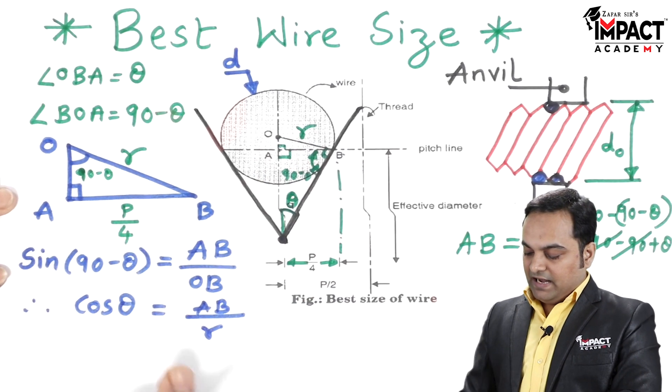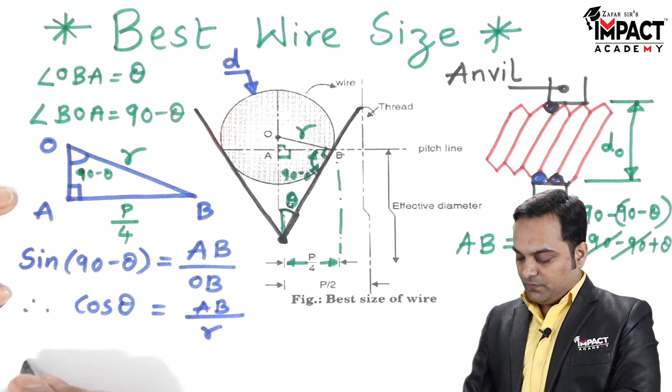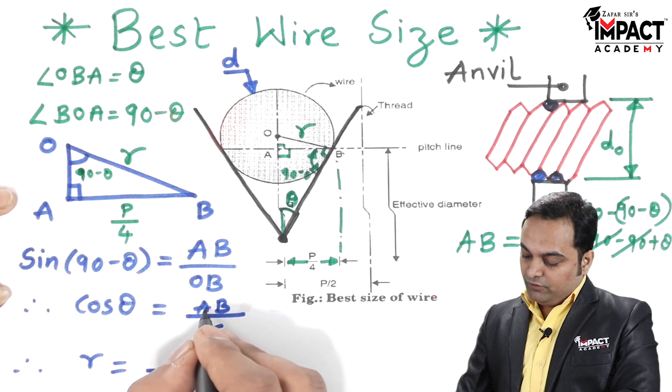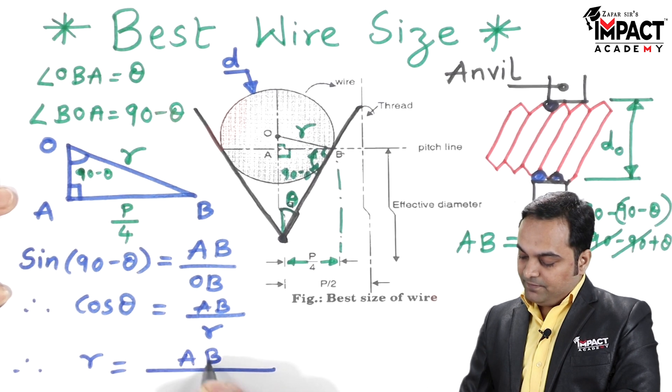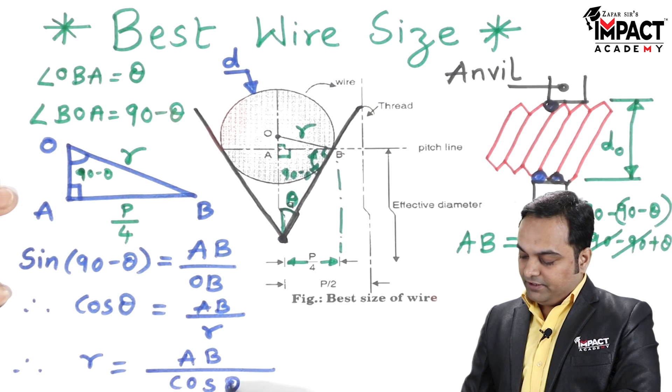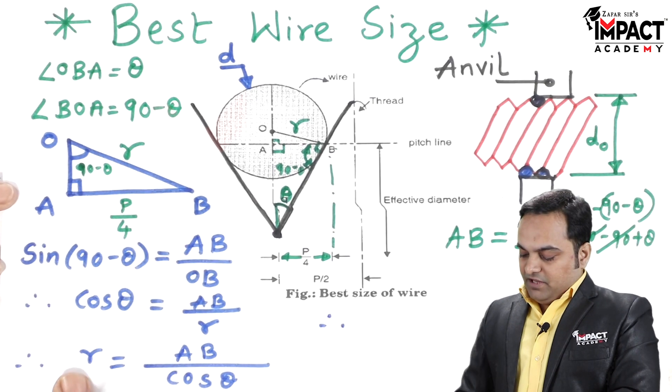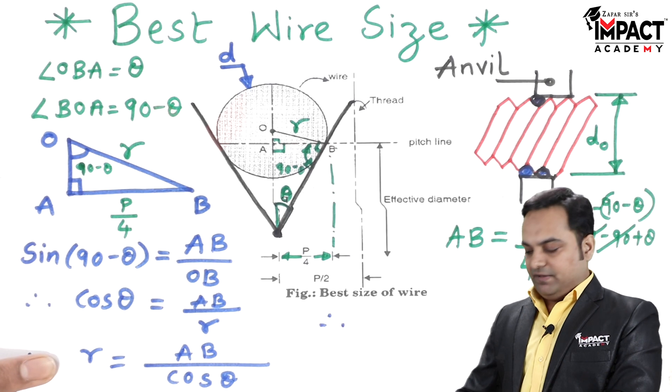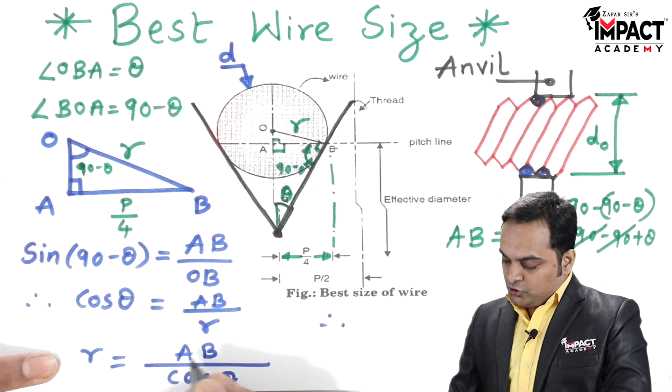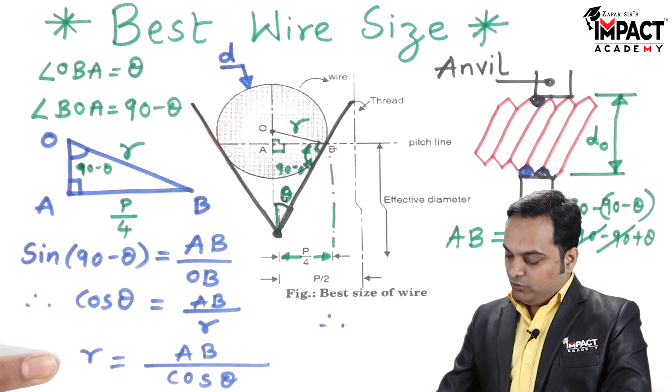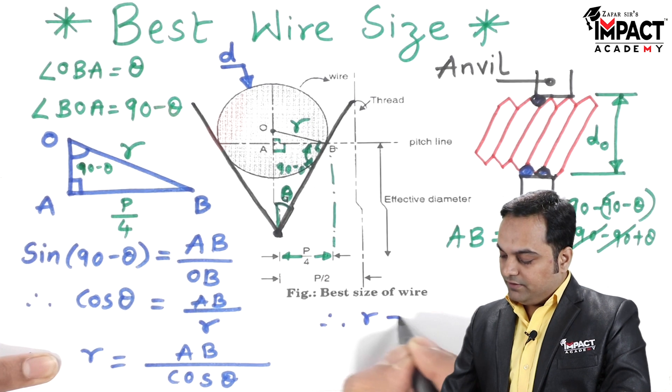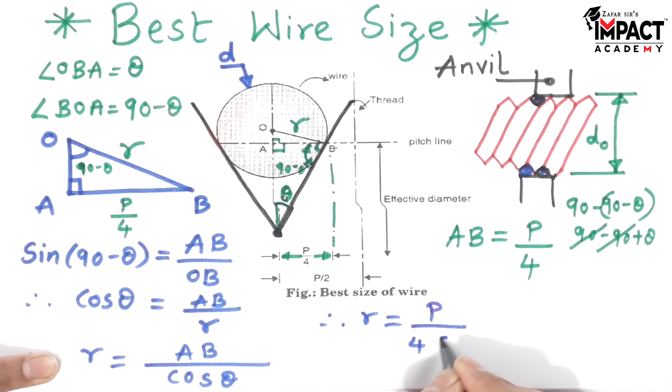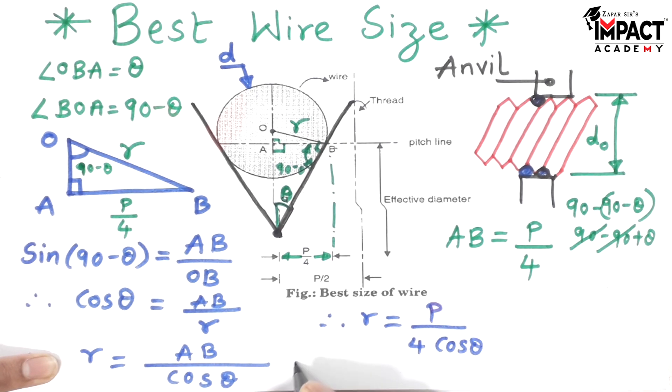I will bring R on one side, so therefore R is shifted on one side. And instead of here I will write down first AB upon cos theta. Now why I am keeping R on one side? Because we need to find the diameter. Once the radius is known, the diameter can be calculated easily. AB value is pitch by 4, so R is equal to P by 4 cos theta. It is 1 upon cos theta, and that is sec theta. So it is P by 4 sec theta.